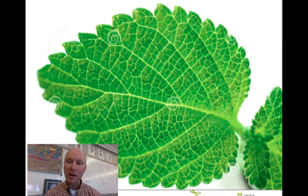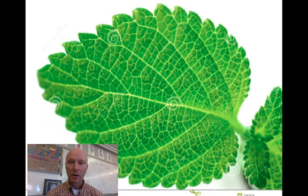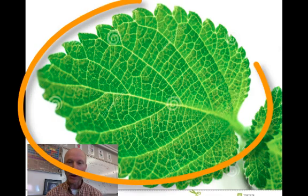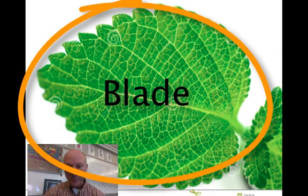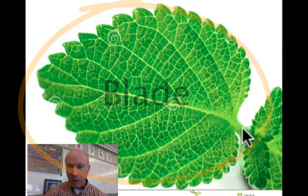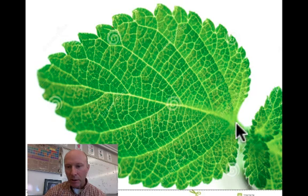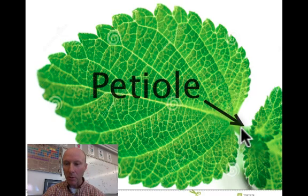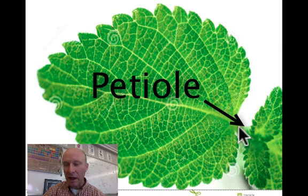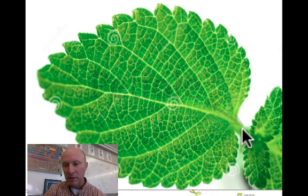What you see behind me is a typical leaf. The large structure is called the leaf blade. The leaf starts down here with a stalk which is actually called a petiole. The petiole is what attaches the leaf to the stem of the plant.